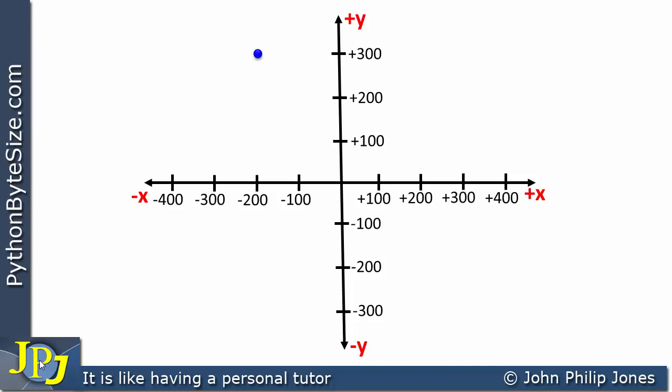Let's consider another point. We come down with the dotted line to the x-axis — that stops at minus 200. We go across to the y-axis, and that goes to plus 300. So the coordinate position is (-200, 300): minus 200 representing the negative x position, and 300 the positive y position. In Python with Turtle, the coordinate will show those values with room for decimal fractions.